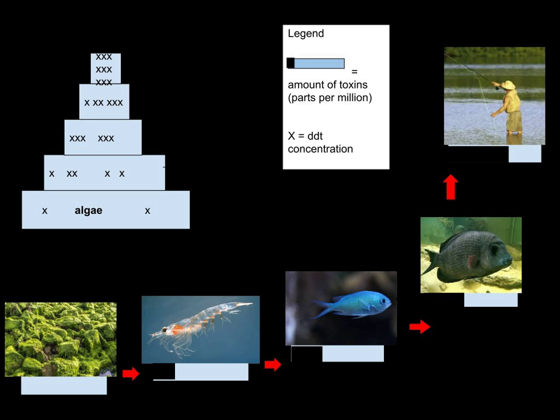Biodilution is also a process that occurs to all trophic levels in an aquatic environment. It is the opposite of biomagnification, occurring when a pollutant gets smaller in concentration as it progresses up a food web.